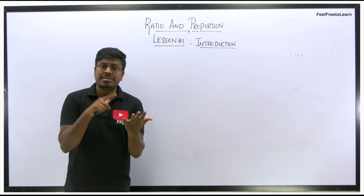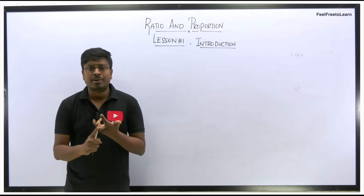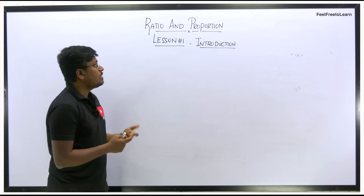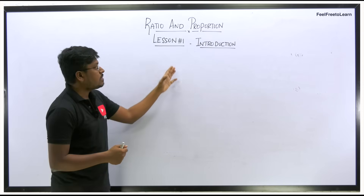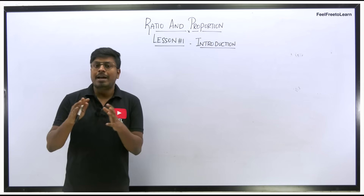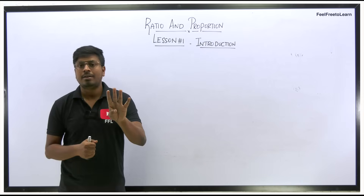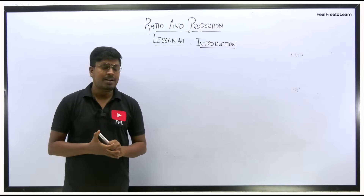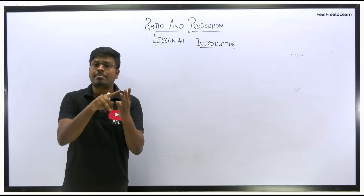We have posted 5 to 7 lessons on percentage, 7 to 8 lessons on average, and 11 lessons on number system. Now we are going to learn ratio and proportion, starting with lesson number one — the introduction. I plan to post 10 lessons on this topic. These four topics are very important; only if you are strong in all four can you be strong in quantitative aptitude. All videos are free on this YouTube channel.